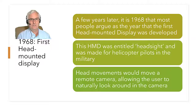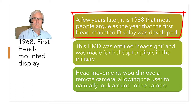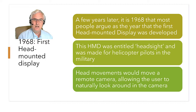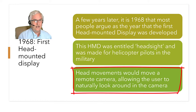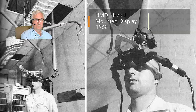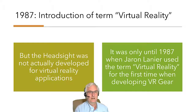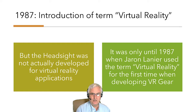A few years later, in 1968, most people argue was the year the first head-mounted display was developed. This head-mounted display was entitled Head Sight and was made for helicopter pilots in the military. Head movements would move a remote camera, allowing the user to naturally look around. However, Head Sight was not actually developed for virtual reality applications — it was mostly a military application. It wasn't until 1987 when John Lanier used the term "virtual reality" for the first time when he developed VR gear.